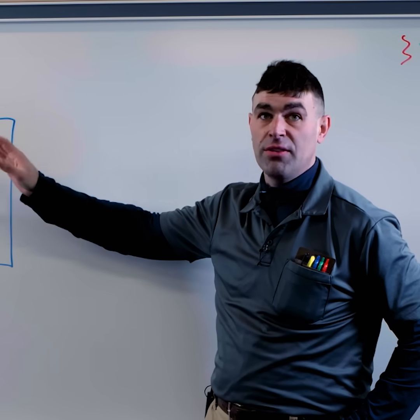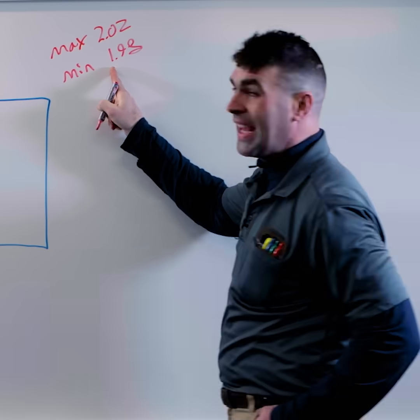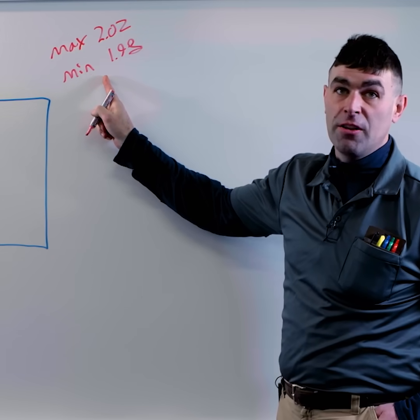Plus or minus 20 thousandths for a total of 40. And we've got a max and a minimum or an upper limit and a lower limit.